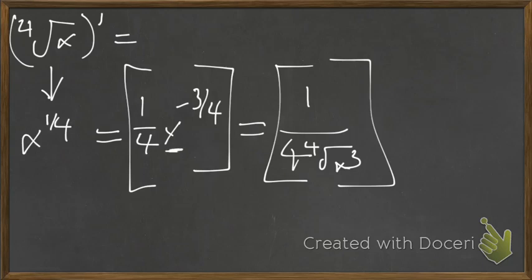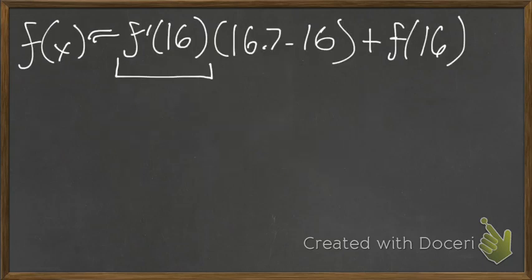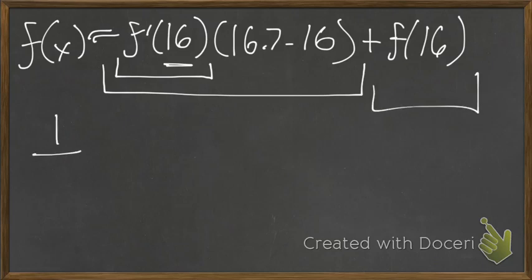So where we see x in either one of these equations, whichever one you want to use is up to you, we are just putting in the 16. And so, with that, taking that prime and combining it with this, we're going to get 1 over 4 times 2 cubed times 7 over 10 plus 2.